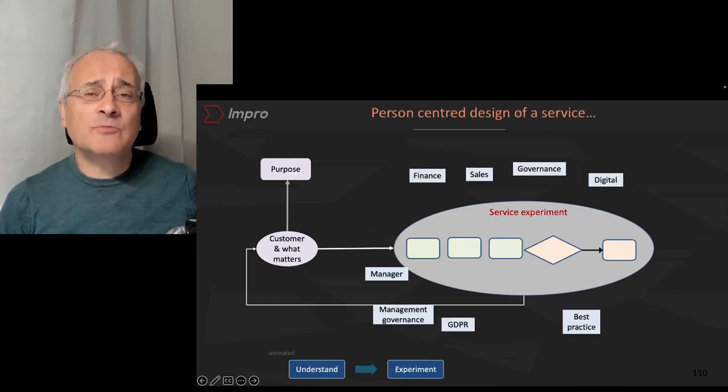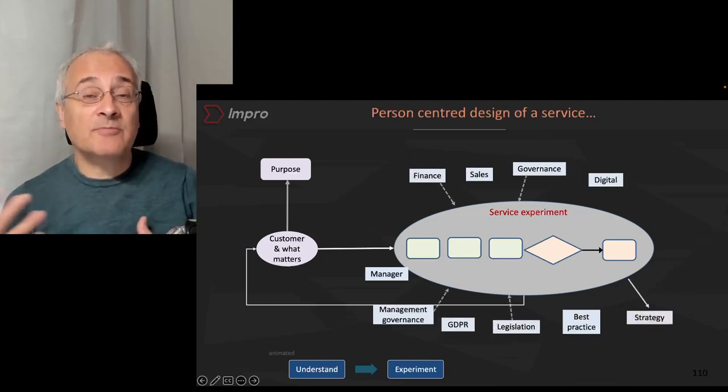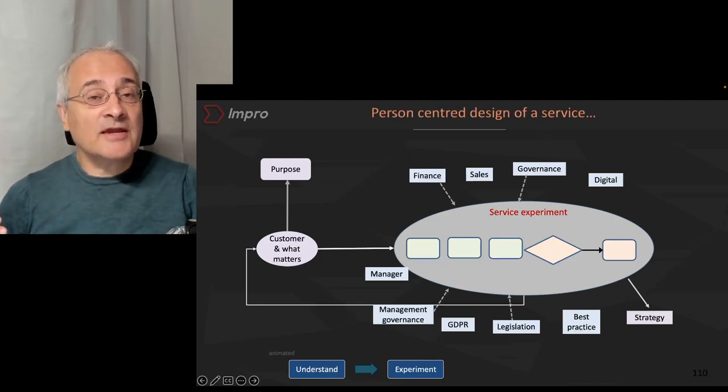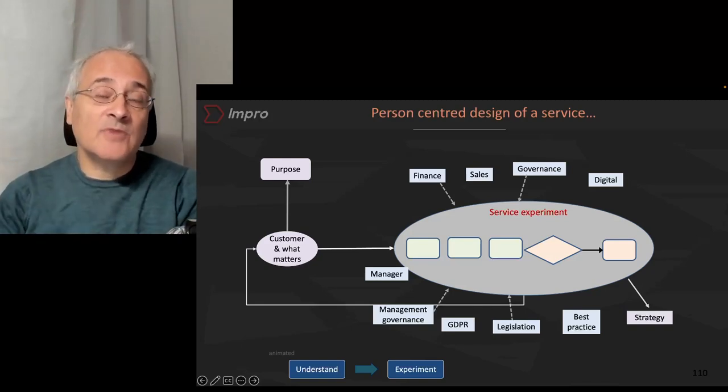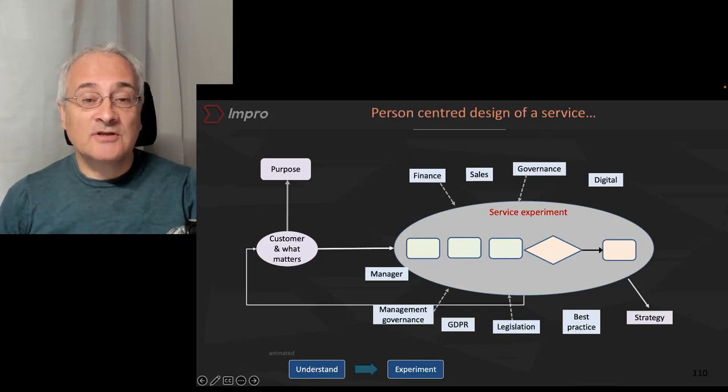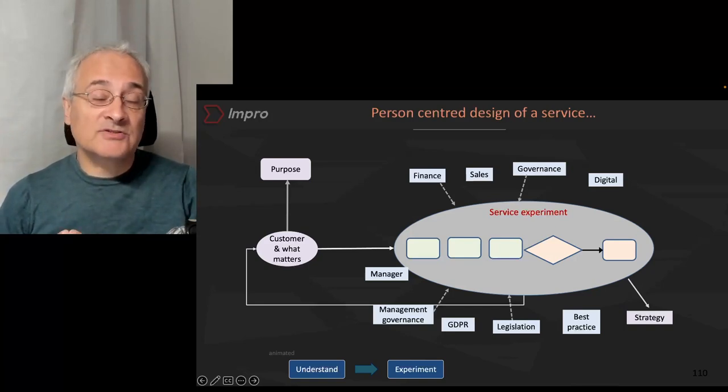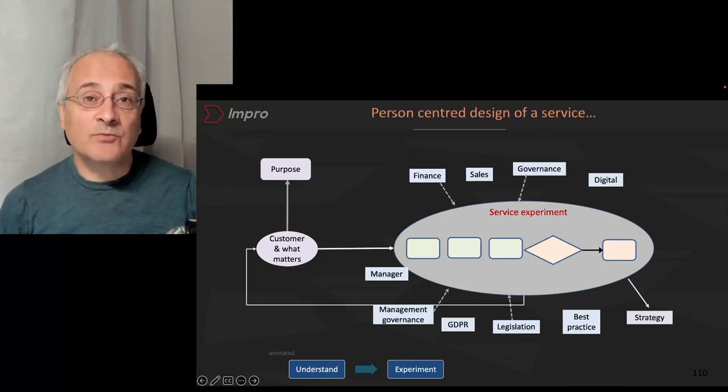And there'll be times when we do need to engage with other parts of the organisation. But the way that we engage with them is that we go to them and we get those elements that we need that will help us to develop a new way of working. But we translate what is out there into the way of working that we want in the room. The people in the bubble will make the decisions and they can't be imposed by those outside of the bubble.